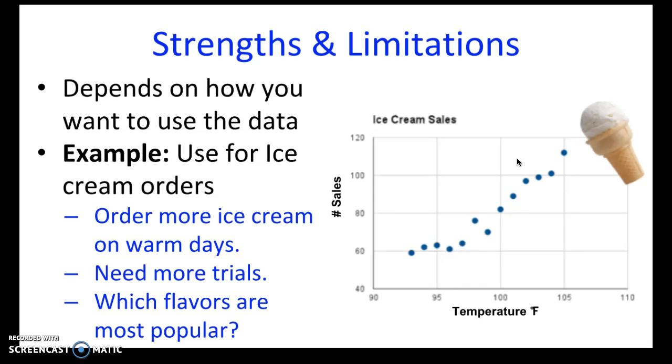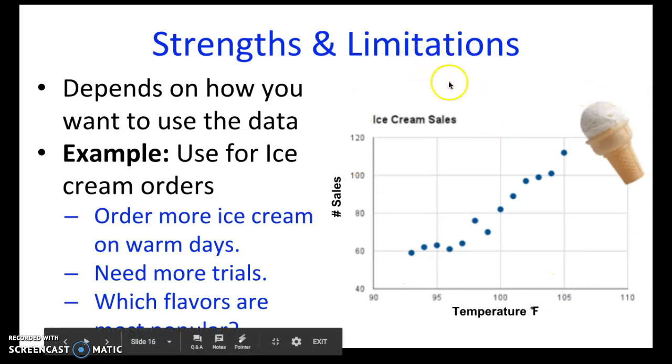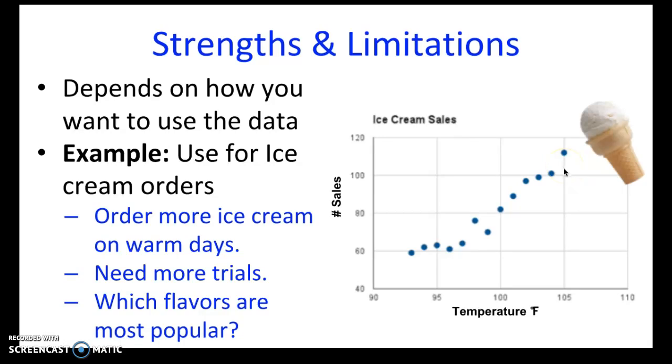In addition to figuring out the story that the data is telling you, you also need to know your strength, the strengths and limitations of the data. And that's going to depend on how you want to use the data. For example, if I wanted to use this ice cream sale data to order, to figure out how much ice cream I should order for my store, I could say that on warm, warm days, I definitely need to order more ice cream. Because that's what this data is telling me since the number of sales increase with the temperature.